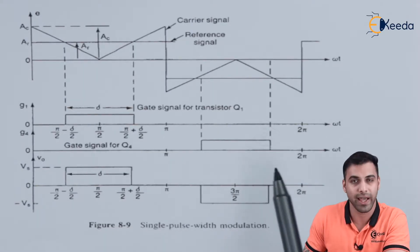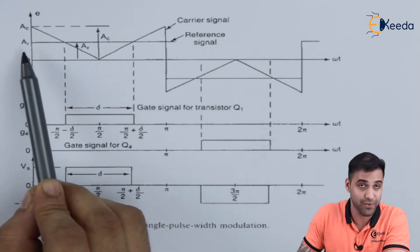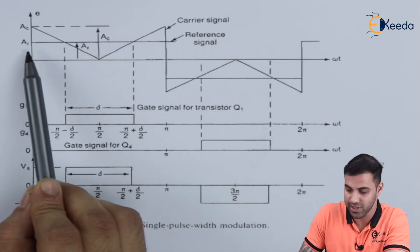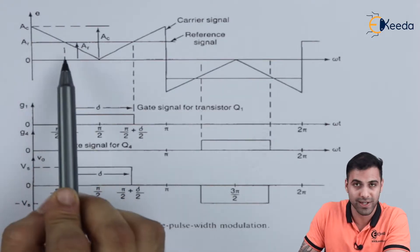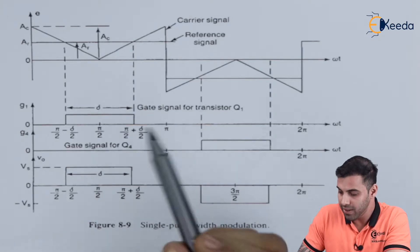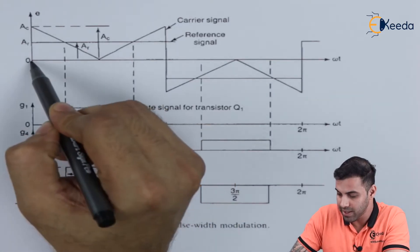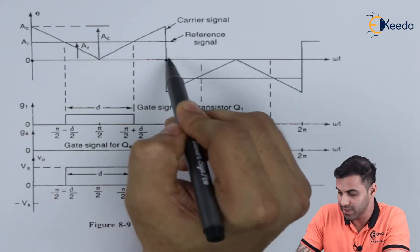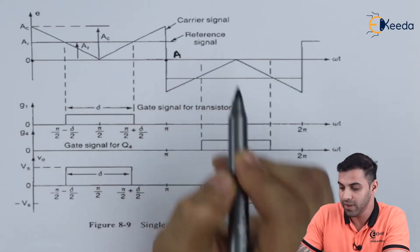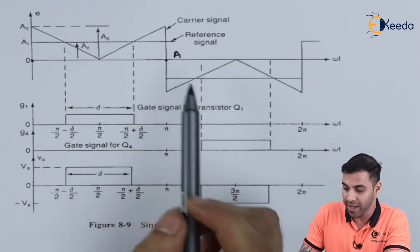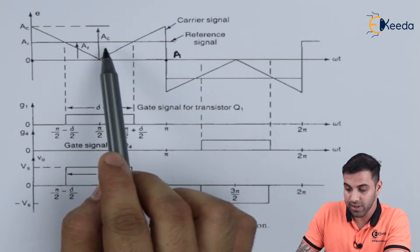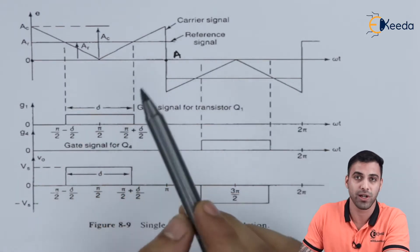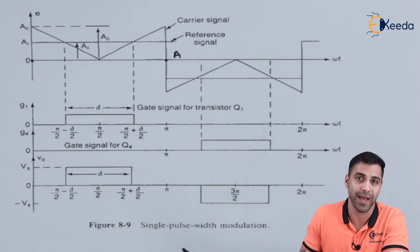If you can see this diagram, AR is the reference signal that we are giving in for the pulse width modulation, and AC is called the carrier signal. From the time interval point O to point A, we have a reference signal and a carrier signal, and those two signals are given to the input of a comparator.